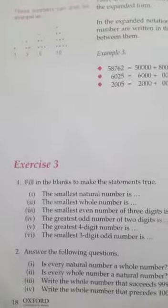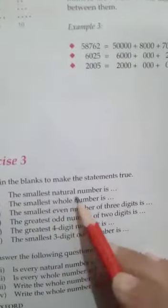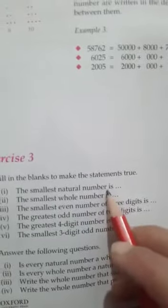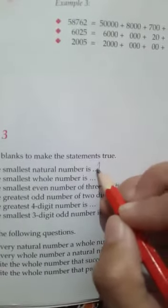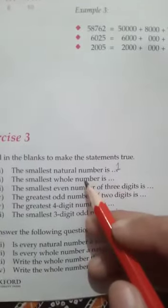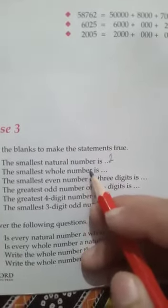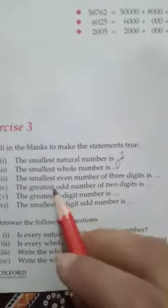Now let's start Exercise 3, which is on page 18. Question number 1 is: fill in the blanks to make statements true. First: the smallest natural number is dash — the smallest natural number is 1. Next: the smallest whole number is dash — whole numbers ka sabse smallest number zero hai, kyunki whole numbers 0 se start hote hain, so the answer is 0.